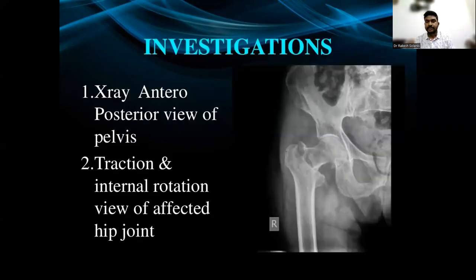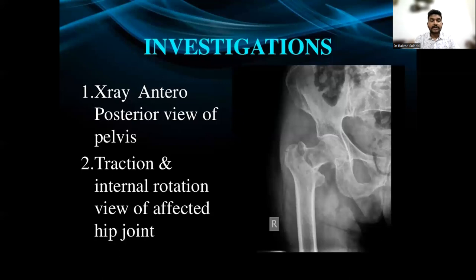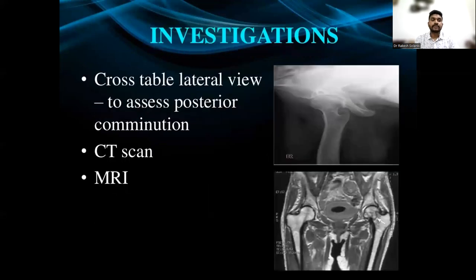How will you investigate? The first investigation of choice is a plain AP view of the affected hip, along with a pelvis AP view with both hips so you can compare the normal side. A traction and internal rotation view of the affected hip joint is also advisable to make the picture clearer. A cross-table or frog lateral view is used to assess posterior comminution. CT or MRI can also be obtained.